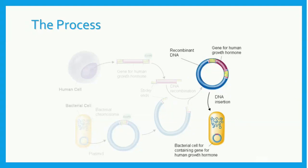The recombinant DNA plasmid is inserted into a bacterial cell. The bacterial cell will clone itself many times over, therefore making many copies of the recombinant DNA plasmid.